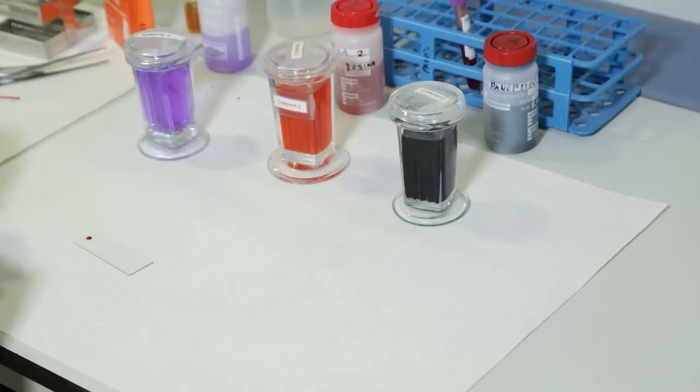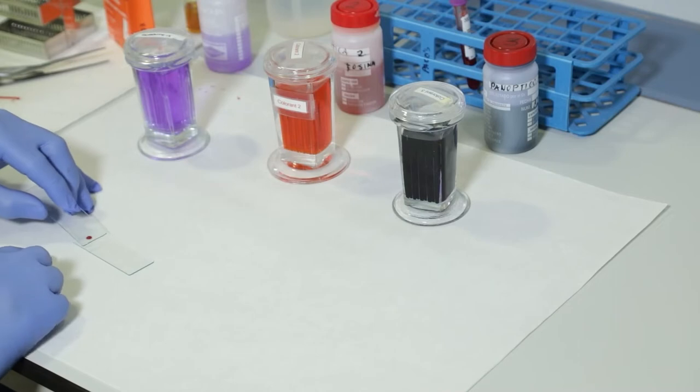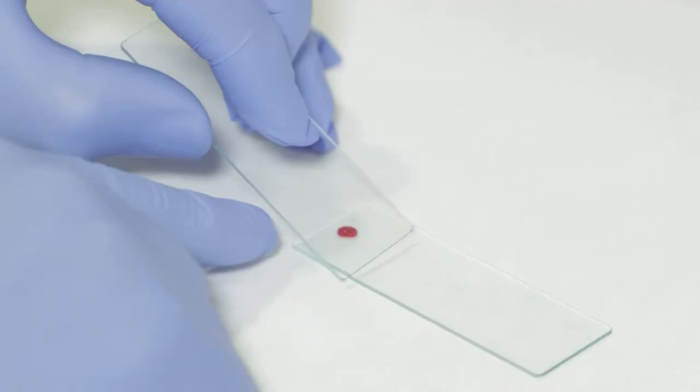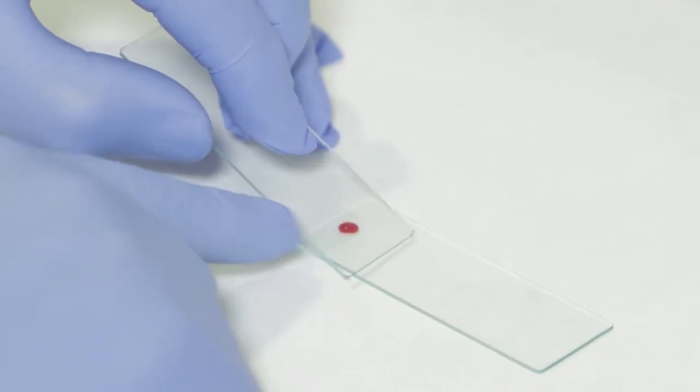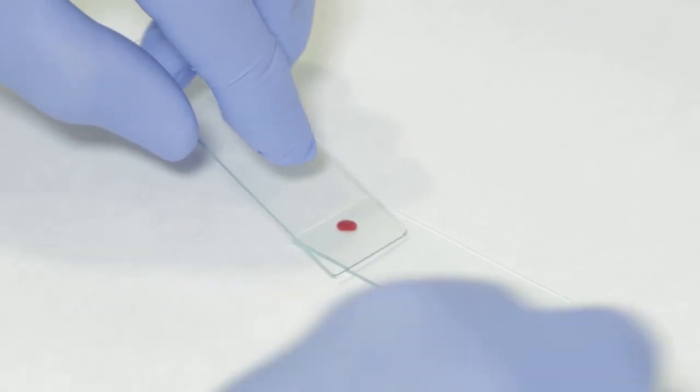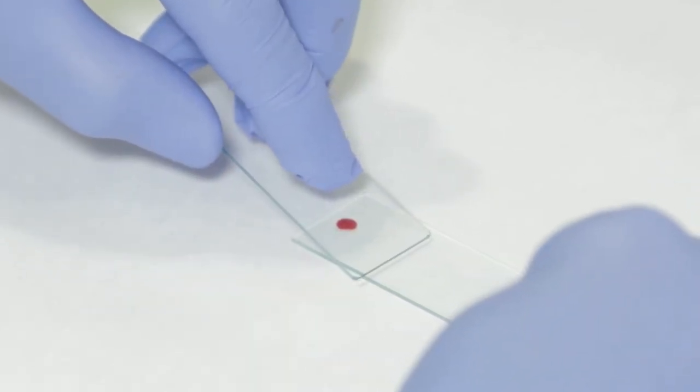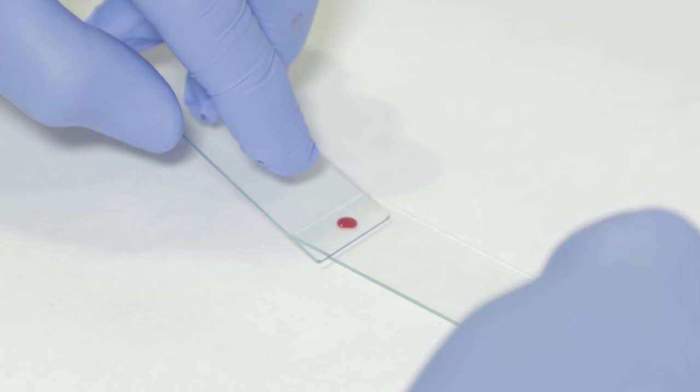With the use of another glass slide, which is polished along its edge, it is placed more towards the center of the slide while forming a 30 degree angle regarding the first slide with the drop of blood. By capillarity, the blood drop will extend along the surface of contact between the slides.